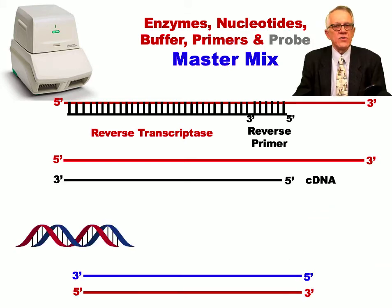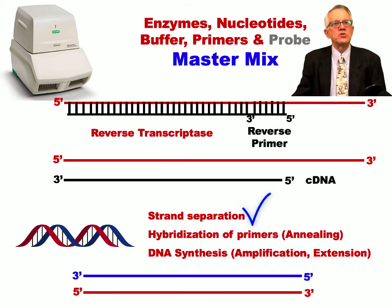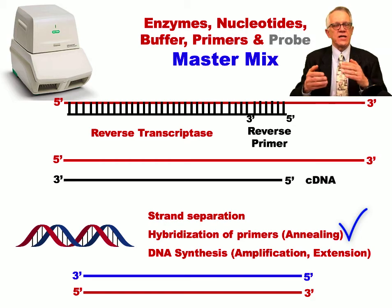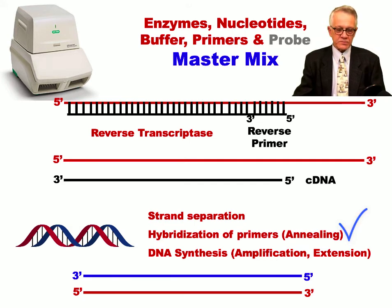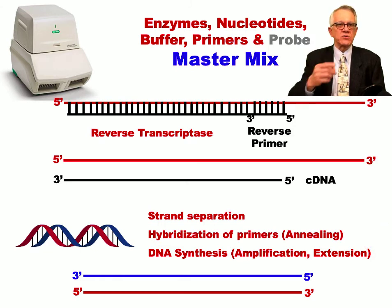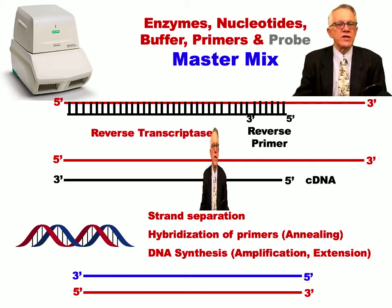Now with the cDNA we have the template and we are going to start the PCR reaction. The first step is to separate the strands of the DNA, because they form hydrogen bonds. The next step is hybridization — annealing the primer with the sequence you want to amplify. Finally, DNA synthesis utilizes another enzyme to undergo amplification and extension. This all occurs in one cycle, with temperature changes back and forth, and the reaction keeps repeating itself.